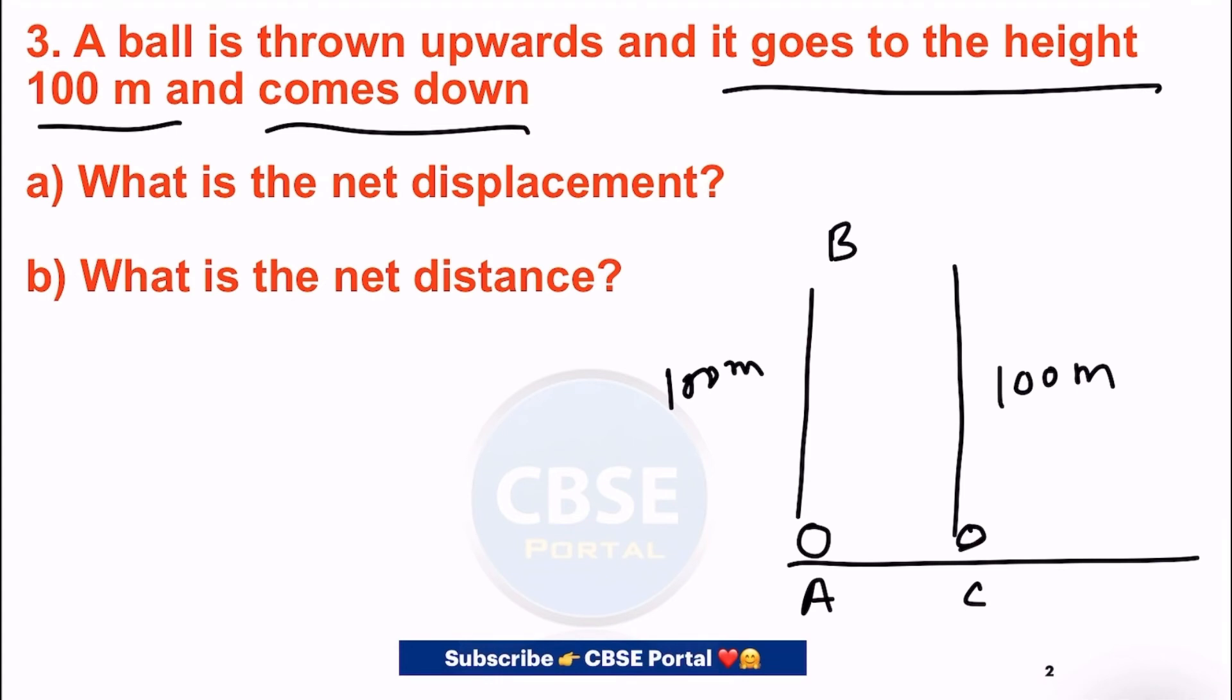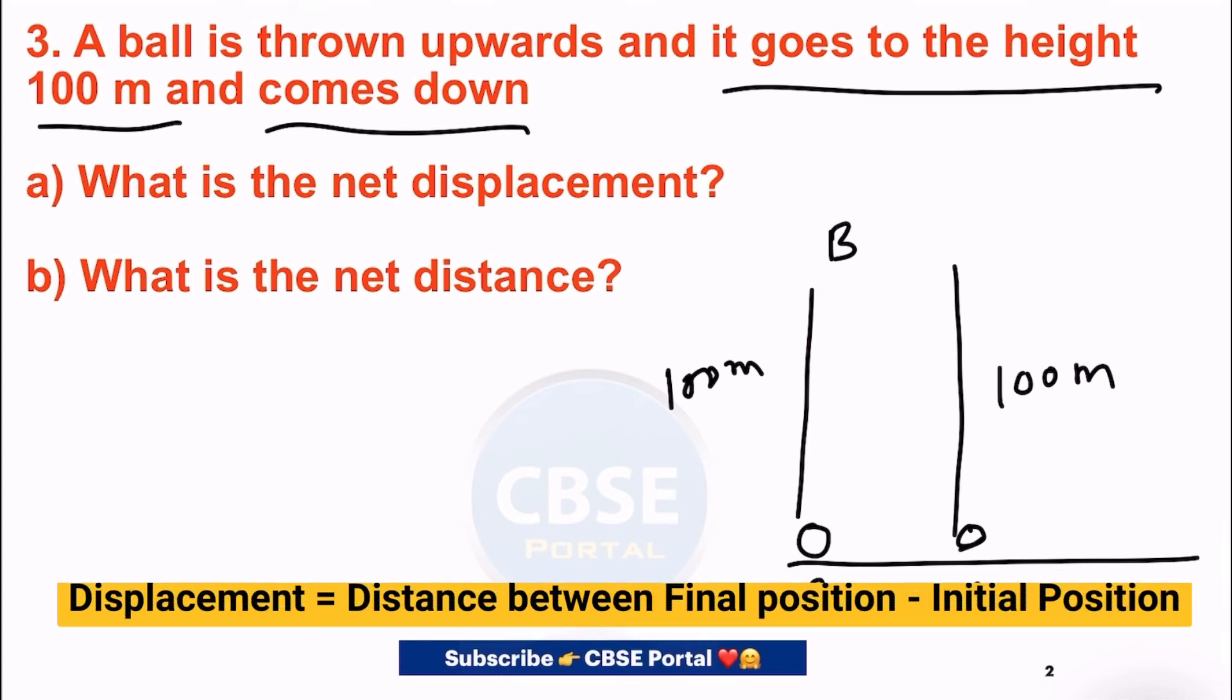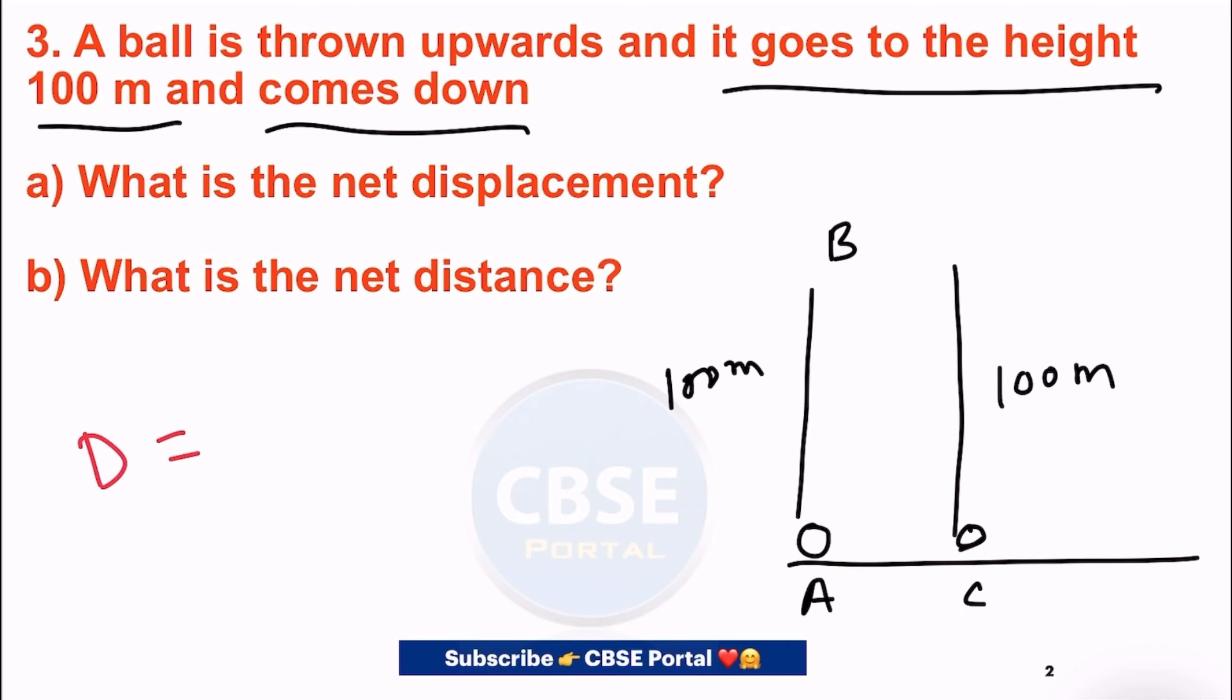The first question asks: what is the net displacement? Displacement is the distance between the final position and the initial position. So displacement is from final position C to initial position A. The distance between C and A is obviously zero, so displacement is zero meter.